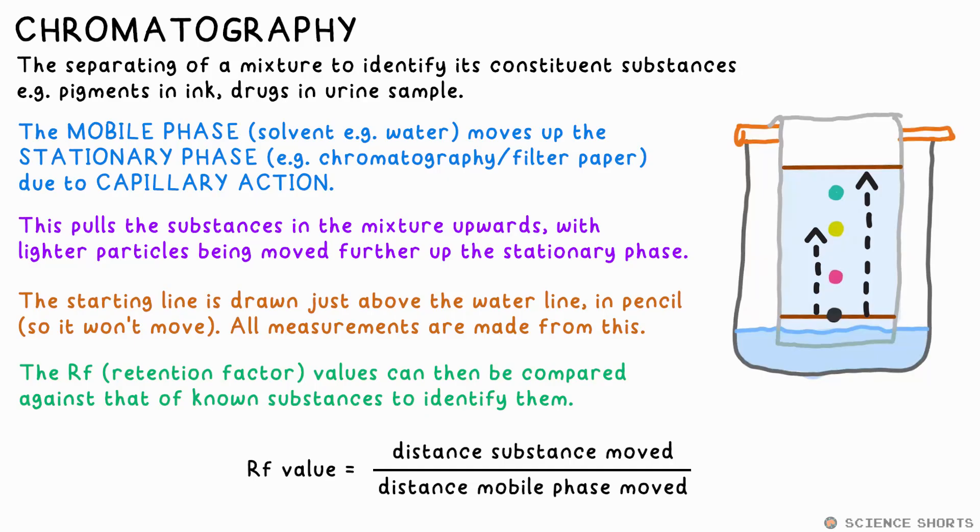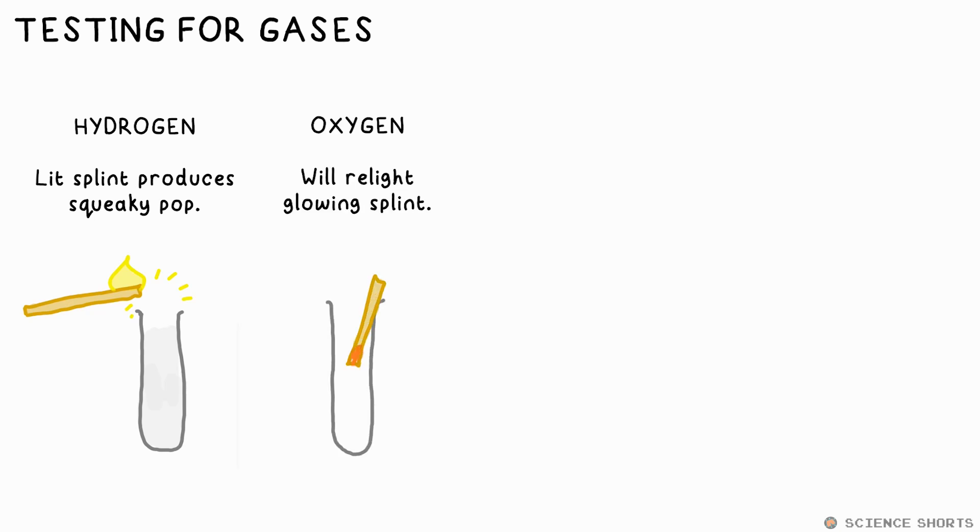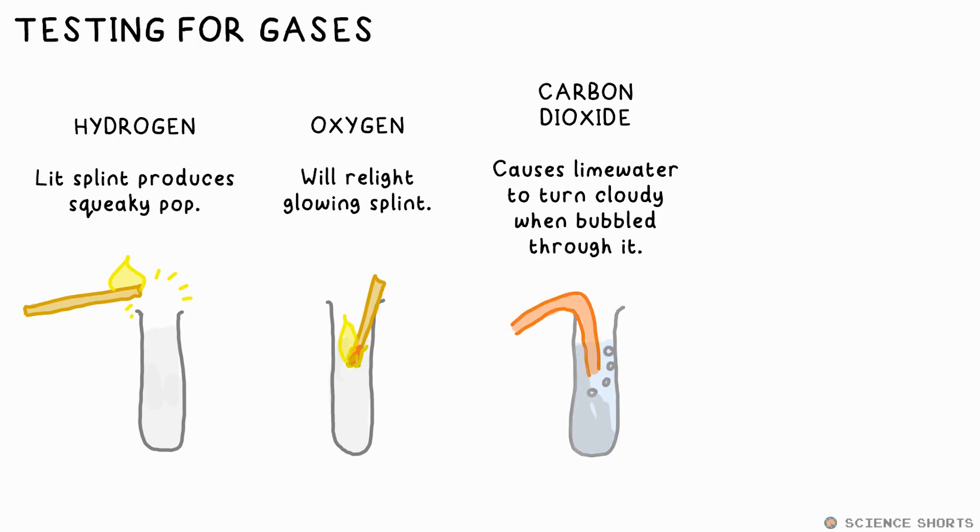If we think we have hydrogen in a test tube, we can test for this by holding a burning splint over the test tube and it'll produce a squeaky pop. If it is oxygen, it will relight a glowing splint. Carbon dioxide will turn lime water cloudy when bubbled through it. Chlorine gas will bleach damp blue litmus paper - that means turn it white.